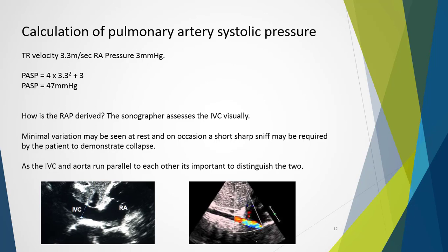Right atrial pressure is derived by assessing the IVC visually. The inferior vena cava connects to the right atrium and is a good representation of right atrial pressure. As a large vein with relatively low muscle fibre content, its walls are very compliant. Breathing changes intrathoracic pressures and venous return — inspiration increases return and causes the vessel to collapse, while expiration has the opposite effect. Both IVC size and compliance with respiration are utilised to estimate right atrial pressure.